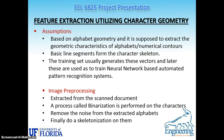I'm going to discuss in detail the feature extraction technique using the character geometry. Based on the alphabet geometry, we suppose that we need to extract the geometric characteristics of alphabets' or numerical contours. The basic line segments from the character skeleton will be extracted. We will use some training set which will generate these vectors and later use these training sets with the neural network based automated pattern recognition systems. Some preprocessing is required for this character geometry: extracting the scanned document and then using a process called binarization to perform the characters. We also have to remove the noise from the extracted alphabets and finally do a skeletonization of the characters.